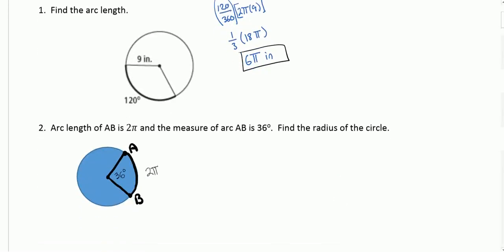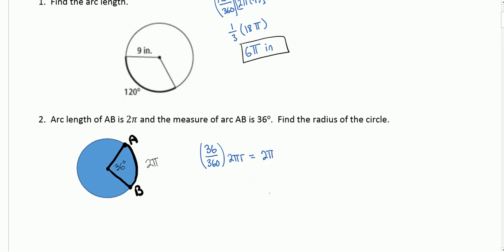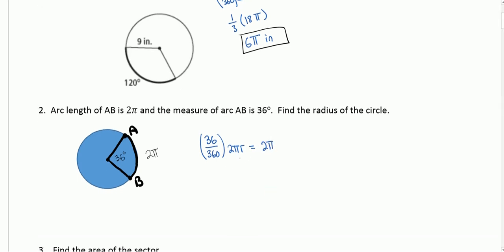Number 2, it tells us the arc length is 2 pi, and the measure of the arc is 36 degrees. Find the radius of the circle. So we know that 36 divided by 360 — that's the fraction of the circle — times 2 pi r is equal to 2 pi. If I divide both sides by 2 pi, I get 36 over 360 times r is equal to 1.